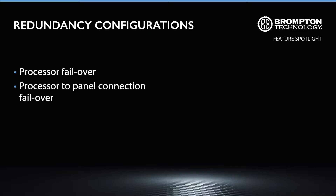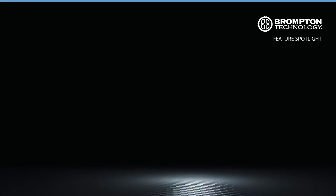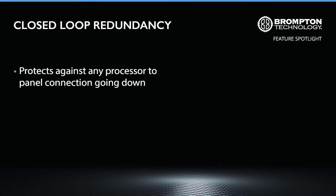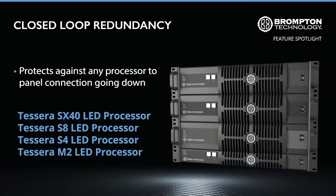There are two types of redundancy that you can take advantage of. The first is closed loop redundancy. This allows you to have backup connections between your panels and processor in case any single connection experiences a fault. This is available for our Tessera SX40, S8, S4, and M2 processors.